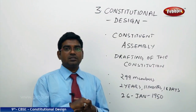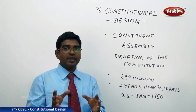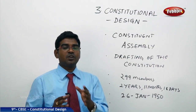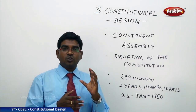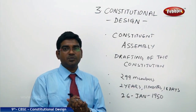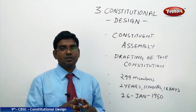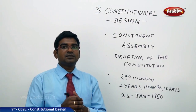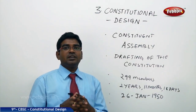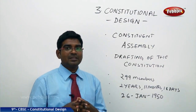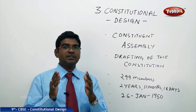Dr. Rajendra Prasad was the President of the Constituent Assembly, while Dr. B.R. Ambedkar was the Chairman of the Drafting Committee. Under their able leadership, the Constituent Assembly leaders took up the great mammoth task of drafting a constitution for an independent India.